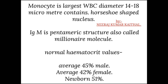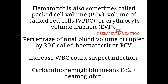Normal hematocrit values: average male 45%, average female 42%, newborn 51%. Hematocrit is also called packed cell volume (PCV), referring to the volume of packed red cells or erythrocyte volume fraction — the percentage of total blood volume occupied by RBCs. Increased WBC count may suggest infection.